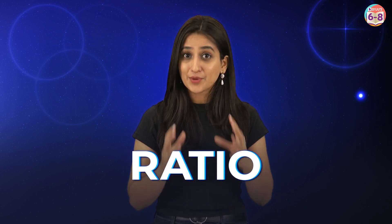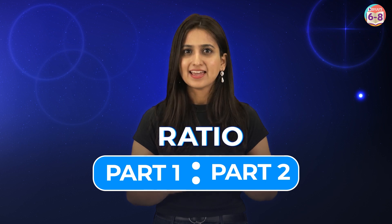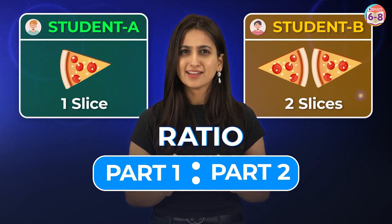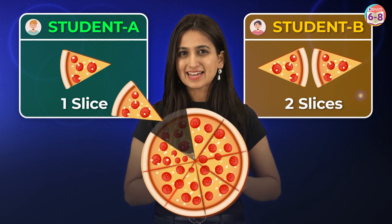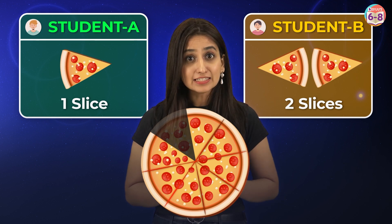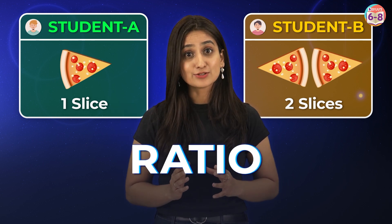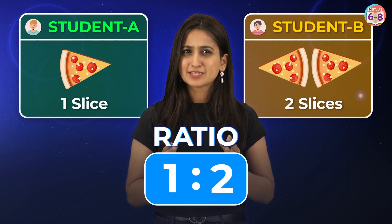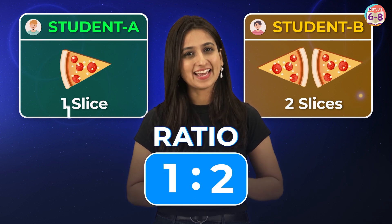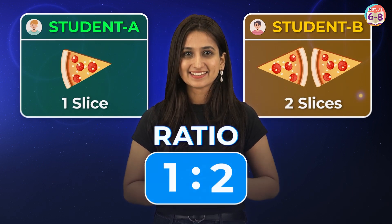We use ratios when we talk about part-by-part comparison of two or more quantities. A ratio is represented by the colon symbol, with the quantities to compare on either side. Here, out of 8 slices of pizza, one slice was taken by student A and two slices were taken by student B. So the ratio of slices eaten by student A to student B would be 1 is to 2. This means that for every one slice student A eats, there are 2 slices that student B eats. When comparing two quantities in a ratio, it's important that they have the same base or the same units, like we did with the pizza wherein the pizza has 8 slices in all.